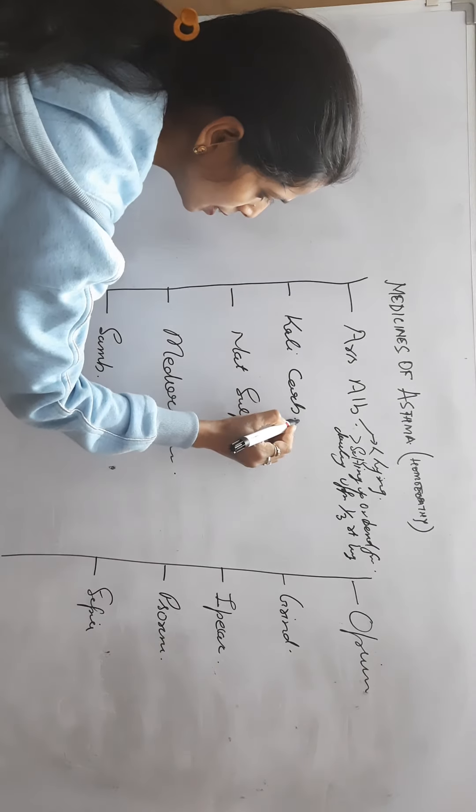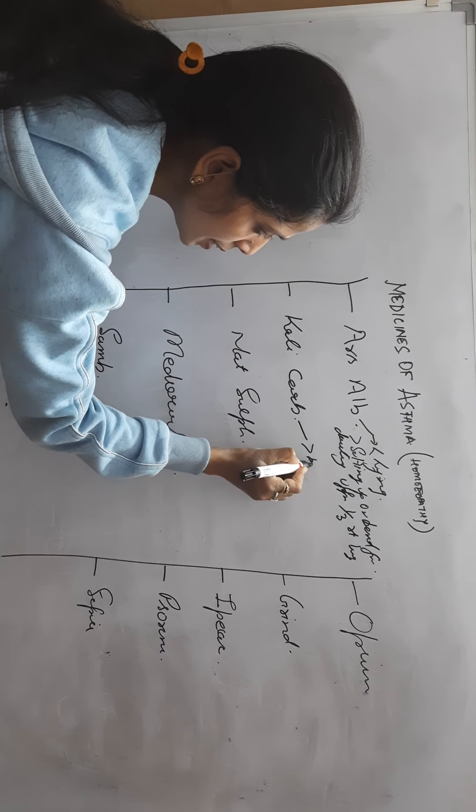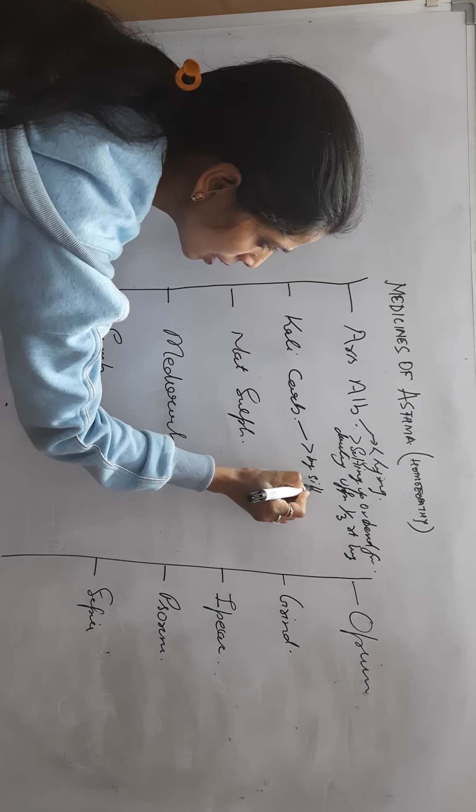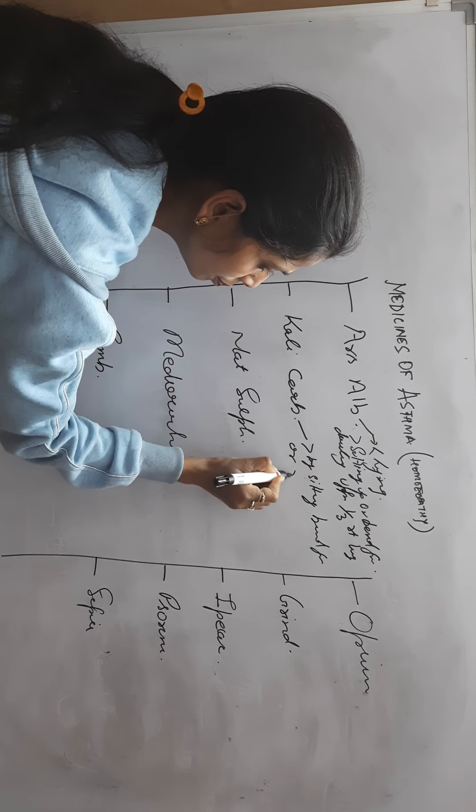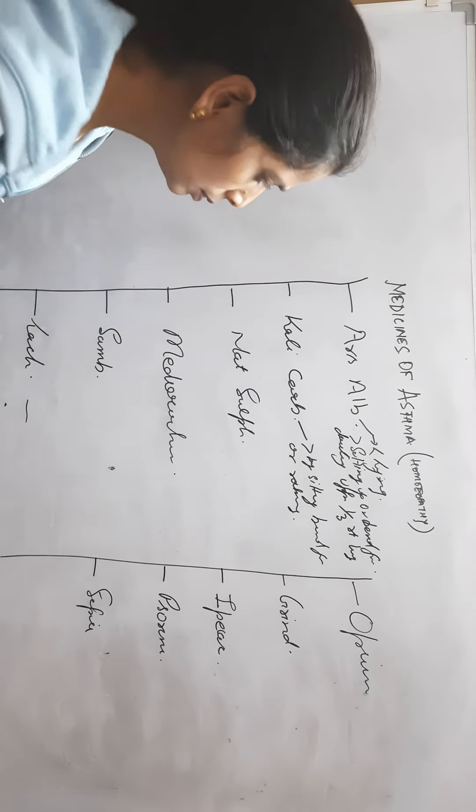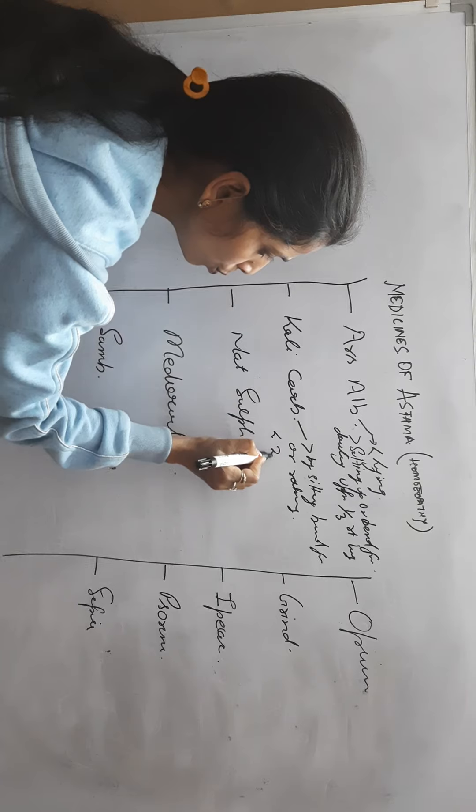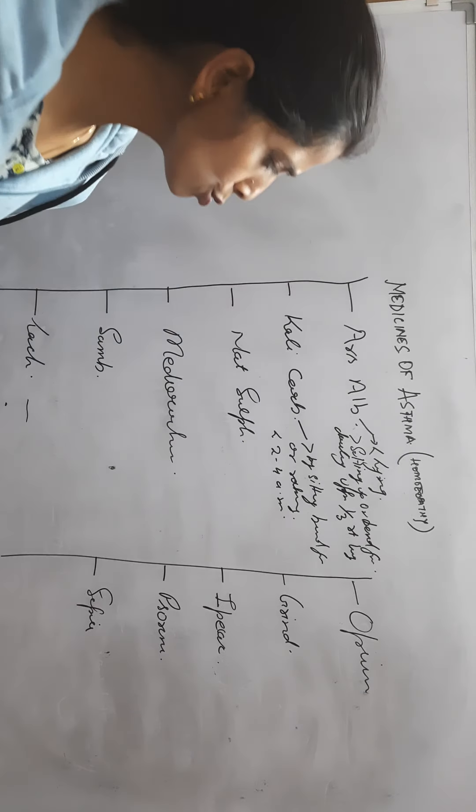Same condition is here. Kali Carb: amelioration by sitting, bending forward, or rocking. But aggravation is 2 to 4 AM. Here aggravation time is 2 to 4 AM.